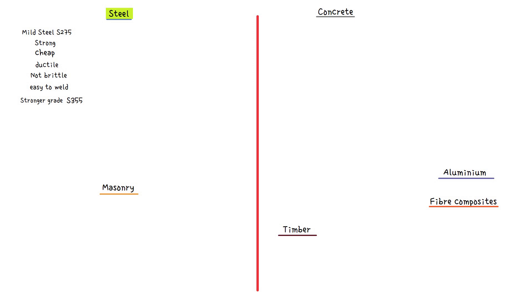Other elements can be added to make special purpose steels. For example, chromium is added to stainless steel, but it is too expensive for general use in structures. For the reinforcing wires in pre-stressed concrete, very high strength steels are produced.